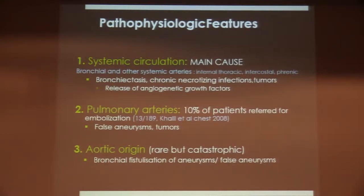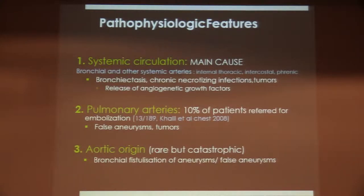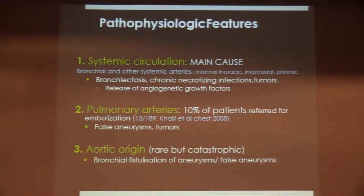Regarding haemoptysis, there are several possibilities. It may originate from the systemic circulation, which is involved most of the time — mainly the bronchial arteries, but also other systemic arteries like the internal thoracic artery or the phrenic arteries. This is the case for patients with bronchiectasis, chronic necrotizing infections, or tumors, because these conditions cause a release of angiogenic growth factors.